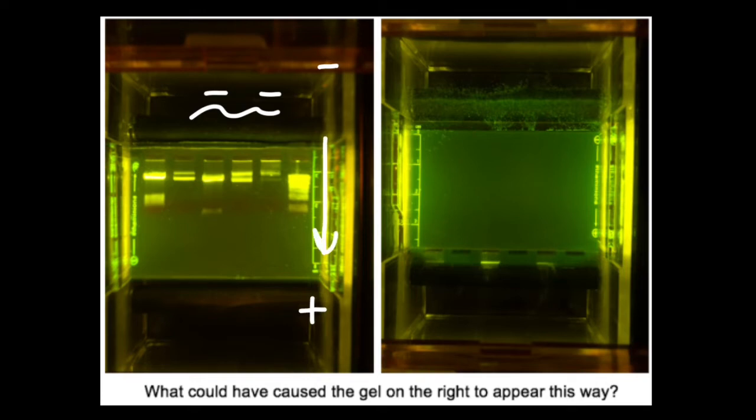Along this way, these bands would separate according to their size. The smaller molecules, the faster they move. Larger molecules would move slower. What happened to the gel on the right?